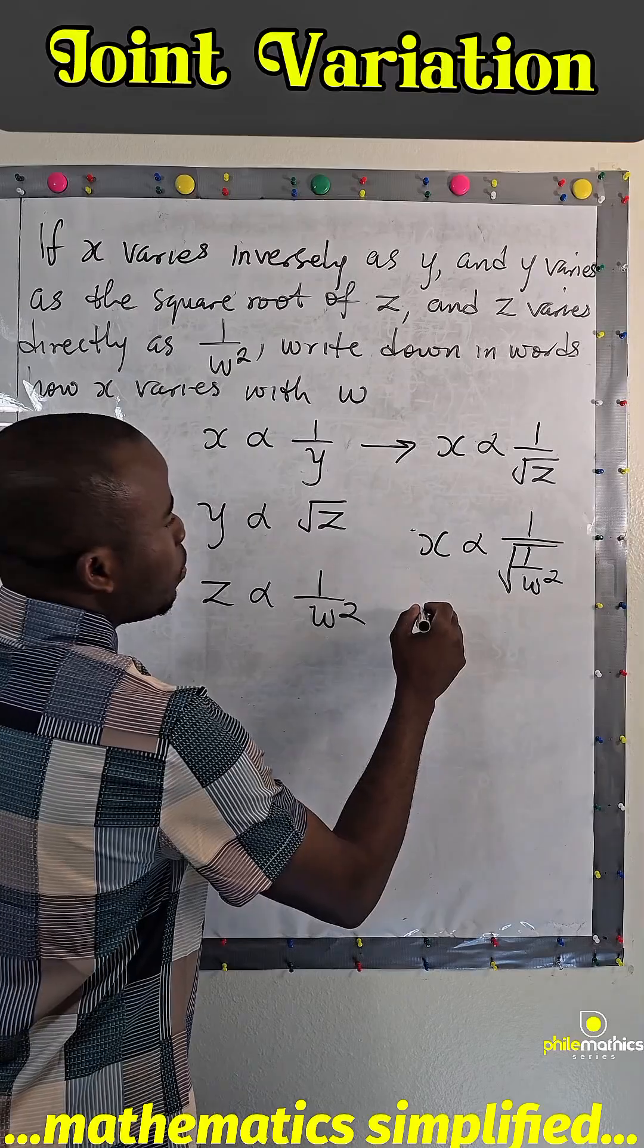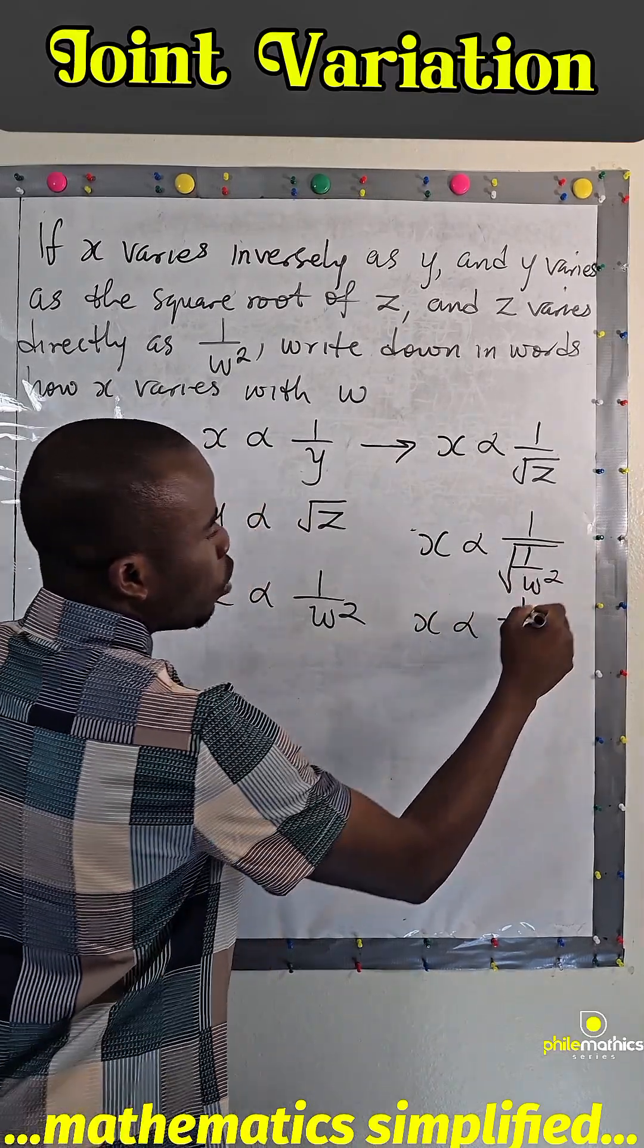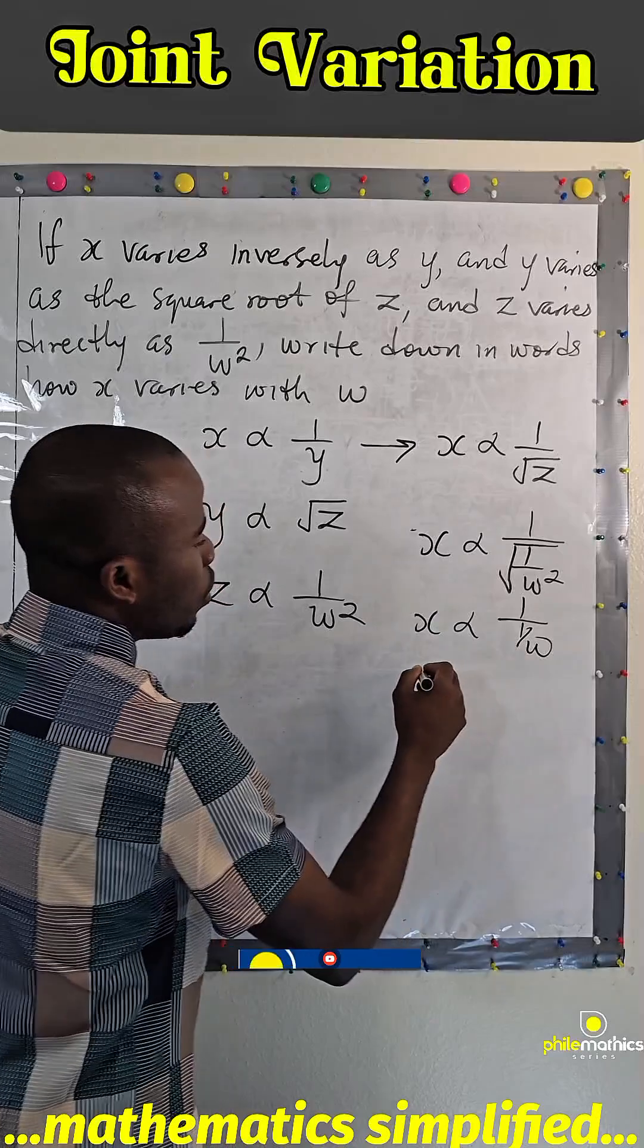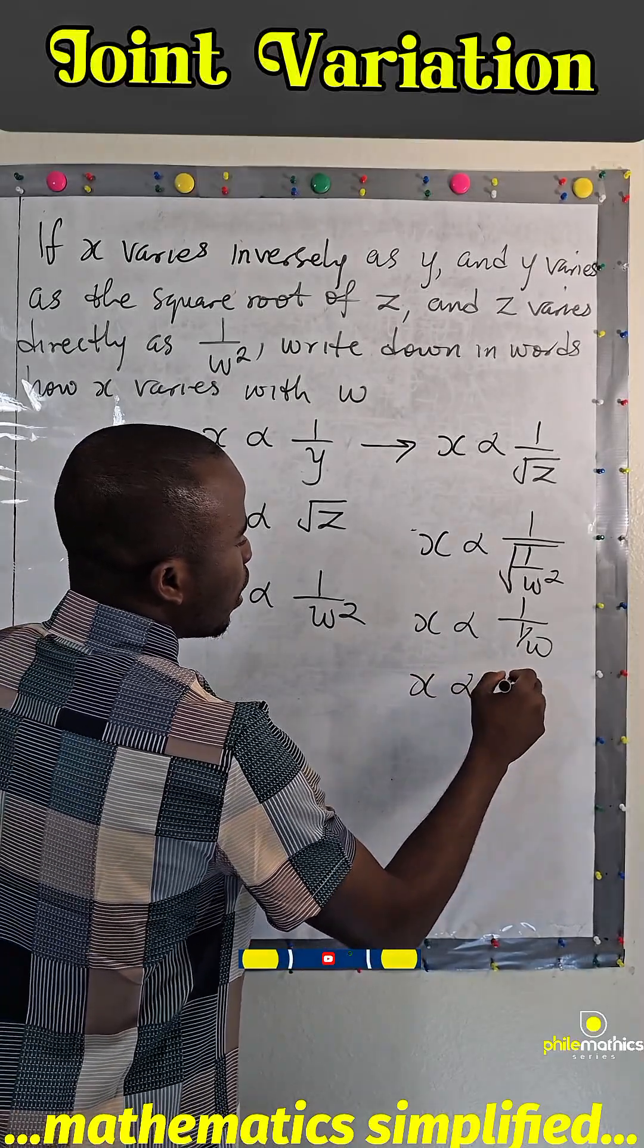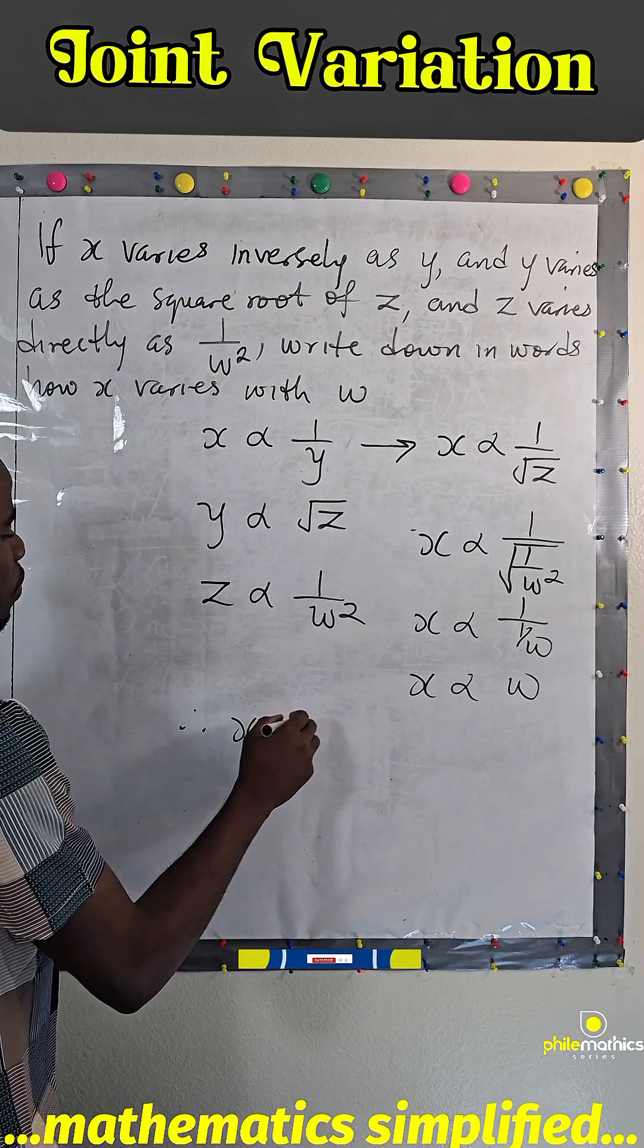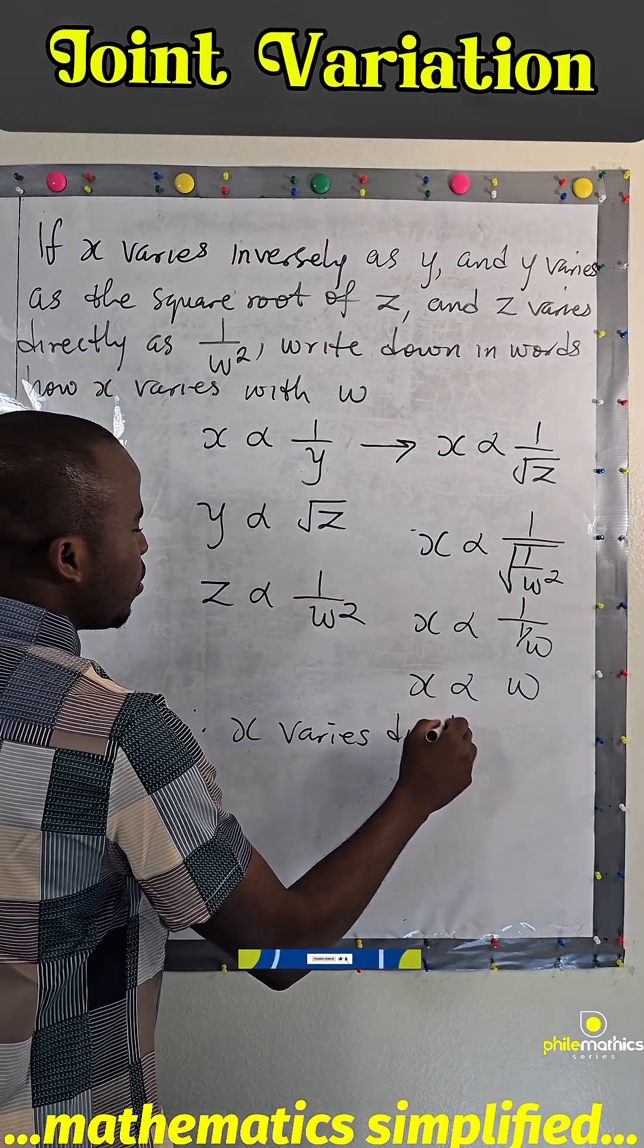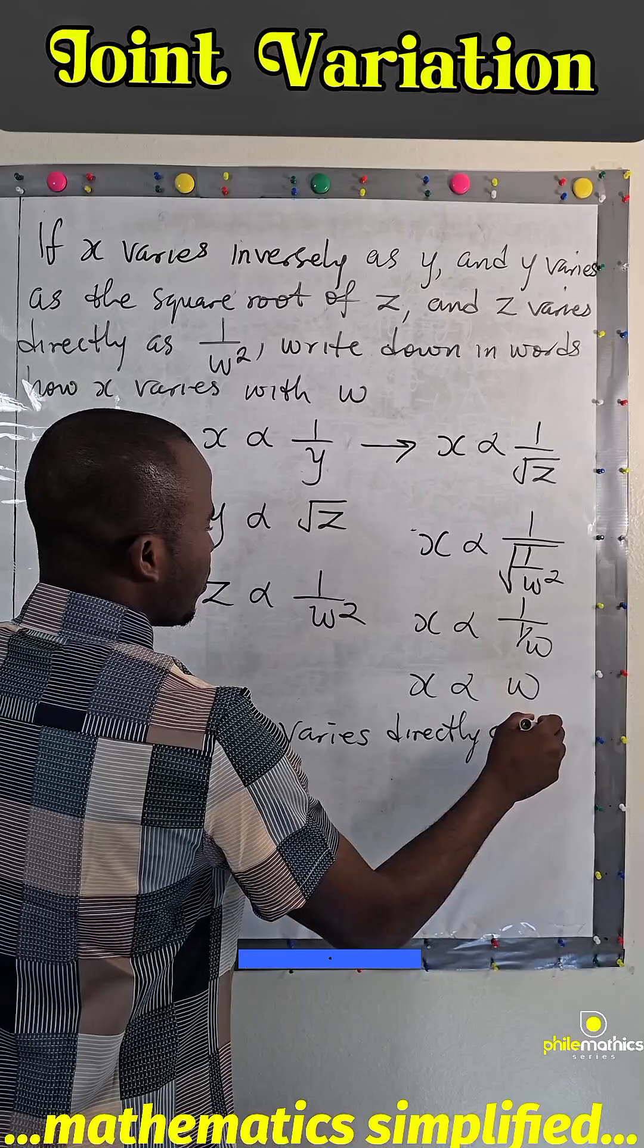So it means x varies as... the square root of 1 over w squared is 1 over w. X varies as w, so it means that x varies directly as w.